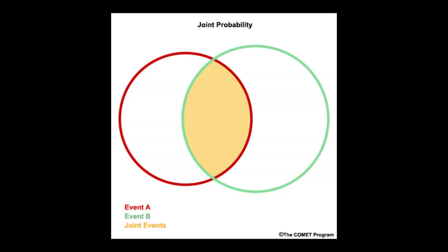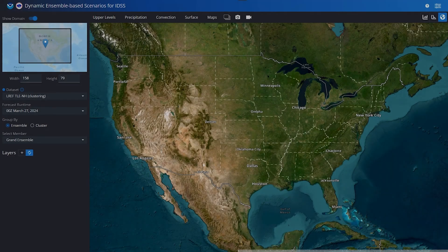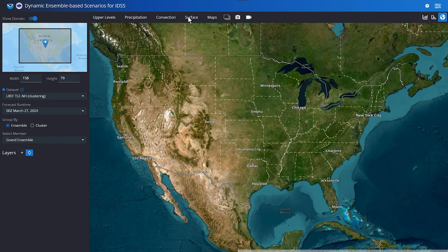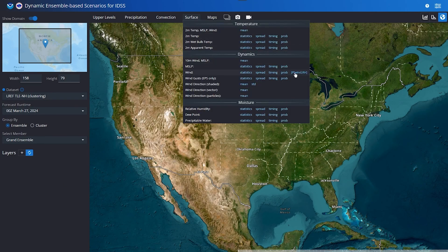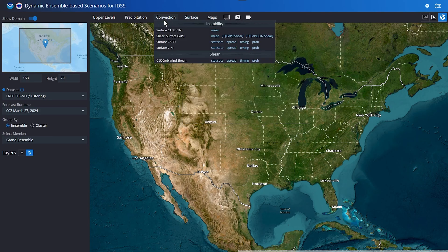Partners sometimes need answers to questions involving an overlap of weather parameters. How joint probabilities are calculated is covered in the Comet Program's Foundations in Probabilistic Forecasting Units 16 and 17 if you need a refresher. The latest version of DESI makes it quite easy to view or create joint probabilities. Some joint probabilities are already set up in DESI, for instance fire weather parameters and convective parameters.